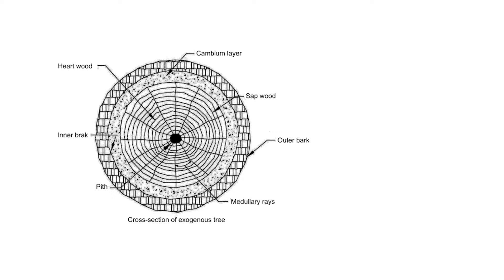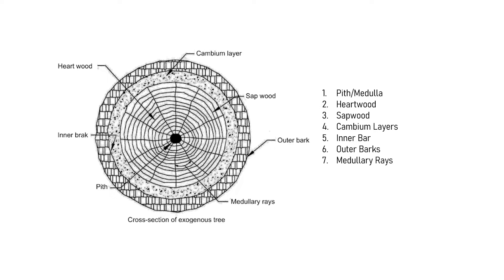But in general, the most important components of a timber are: pith or medulla, heartwood, sapwood, cambium layer, medullary rays, and bark.